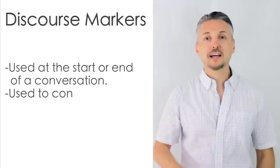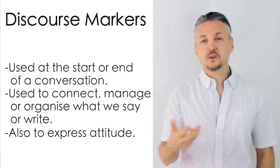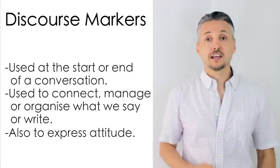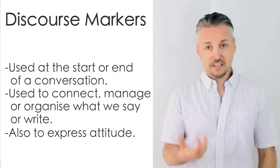So now, let's recap. Discourse markers are words like 'right,' 'okay,' 'to begin with,' etc., that are used at the beginning of a conversation or to end a conversation. Thus, we use them to connect, to manage, to organize what we say or write, and sometimes to express feelings, obviously.